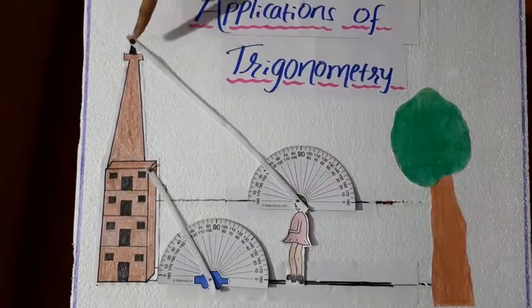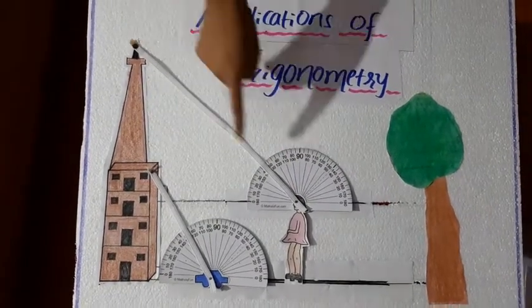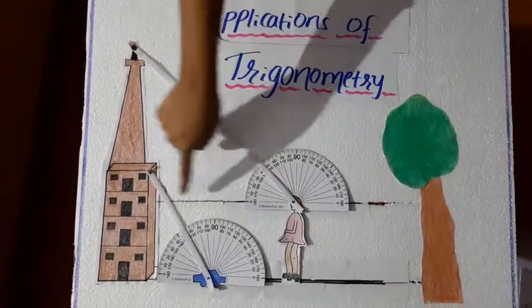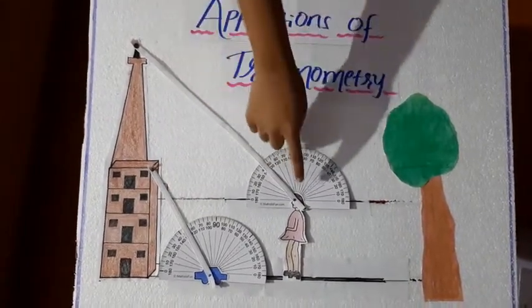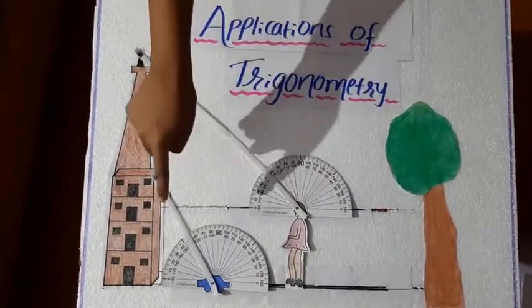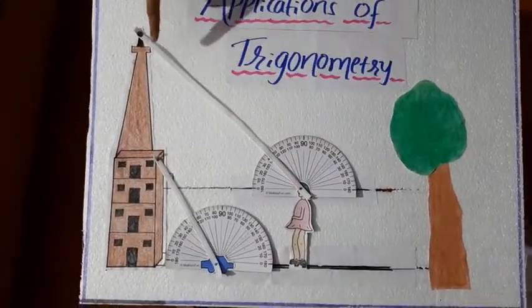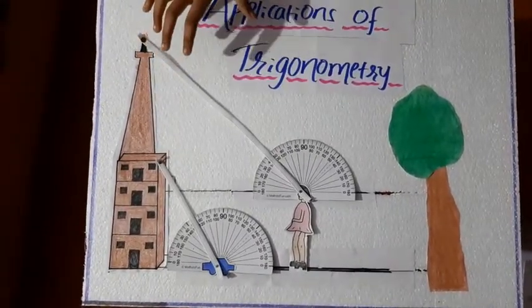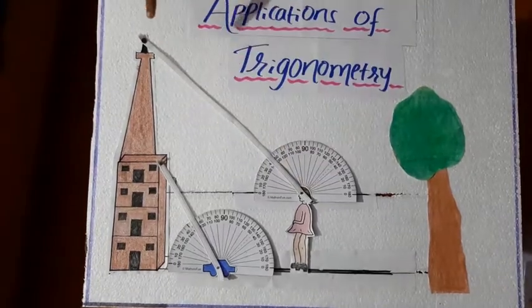Next, she is looking at the top of the building. That means that this, we can call this as an angle. This is the angle between line of sight and horizontal line. And this angle or line of sight is above the horizontal line. That's why we call it as angle of elevation.